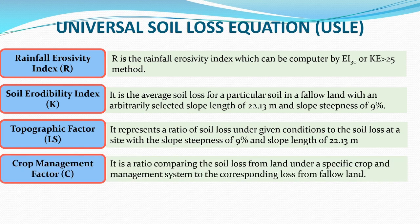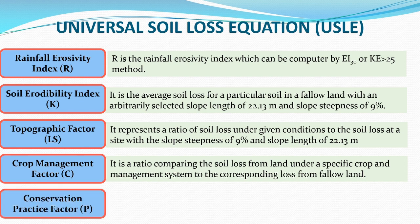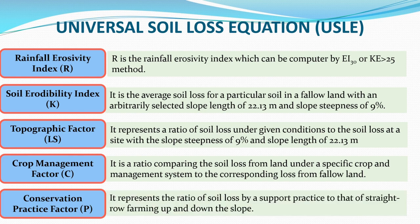The Crop Management Factor C is the ratio comparing soil loss from land under a specific crop and management system to the corresponding soil loss from a fallow land. The Conservation Practice Factor P represents the ratio of soil loss by a support practice to that of straight row farming up and down the slope. When all these factors — R, K, L, S, C, and P — are multiplied, we get the average annual soil loss, usually in tons per hectare.